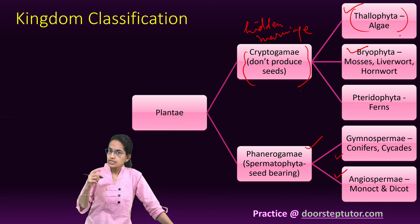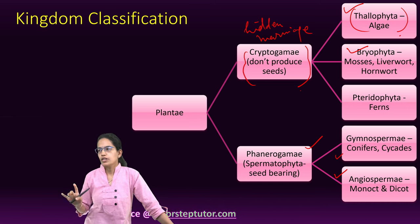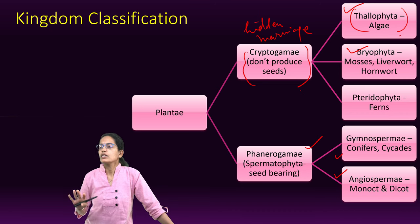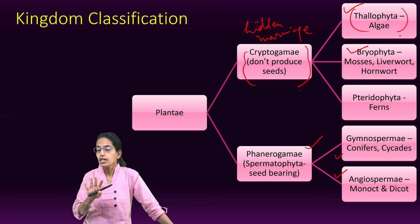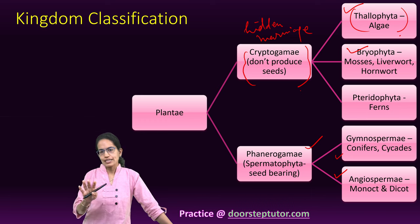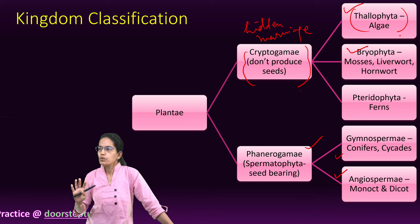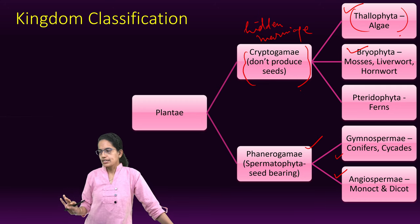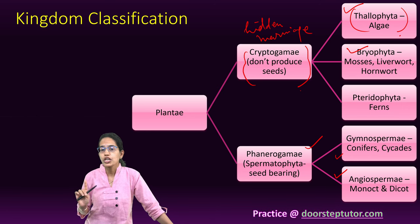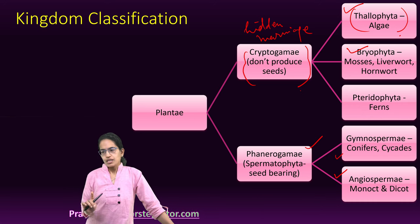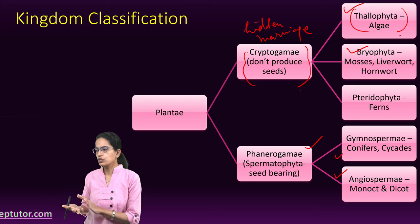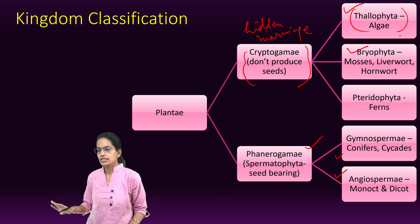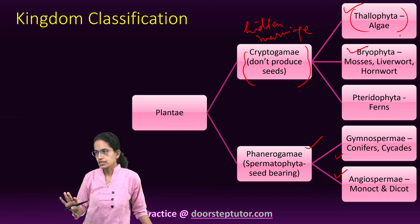Under Bryophyta, the next classification under Cryptogamae, we have three important groups: Mosses, Liverworts and Hornworts. Mosses: Sphagnum is a good example. Liverworts: Riccia is a good example. Hornworts: Anthoceros is a good example. Bryophytes are the first terrestrial plants, present in shady damp areas. They are also called the amphibians of the plant world because they grow in damp areas and require water for fertilization. Xylem and phloem are absent. They do not have proper roots or flowers.